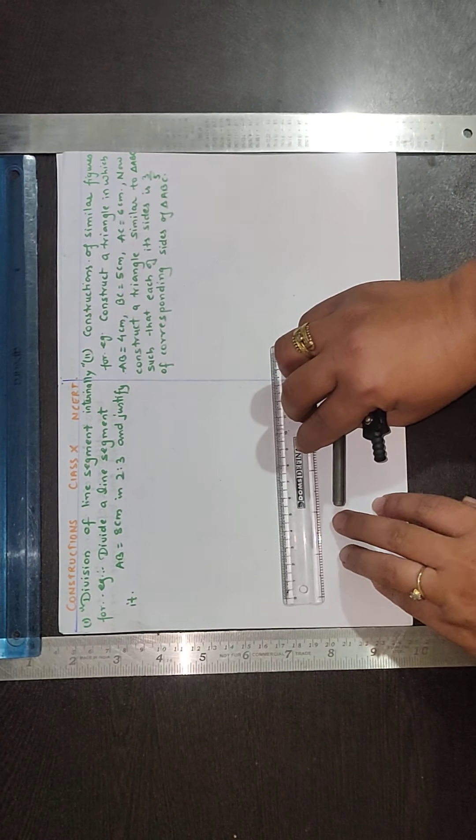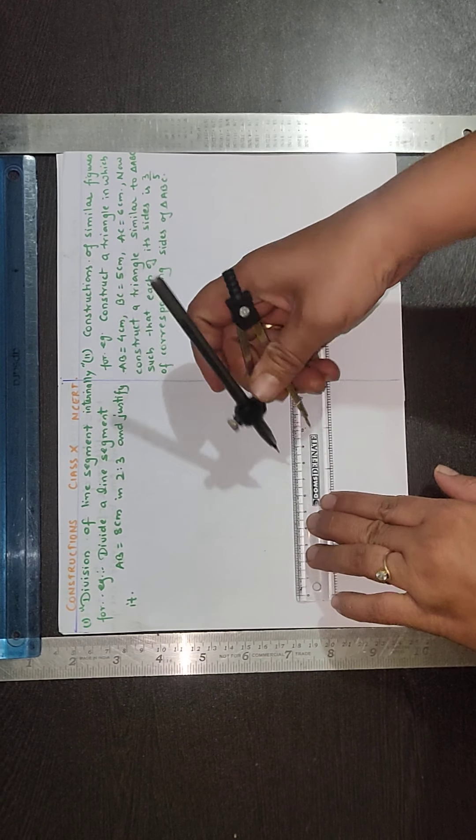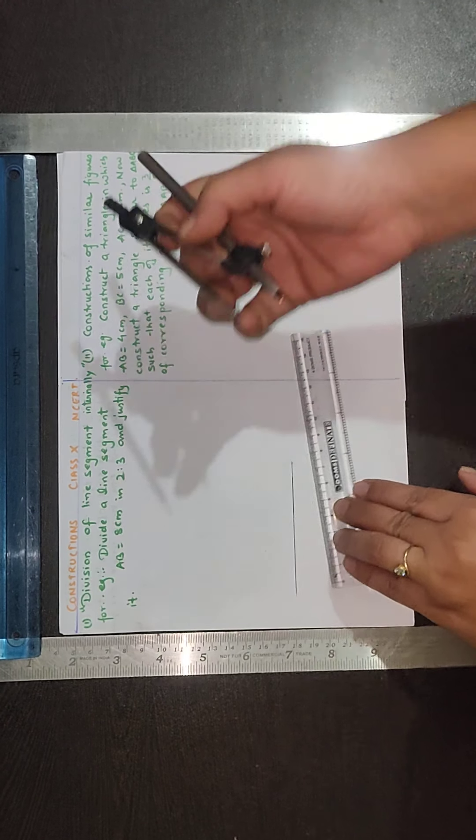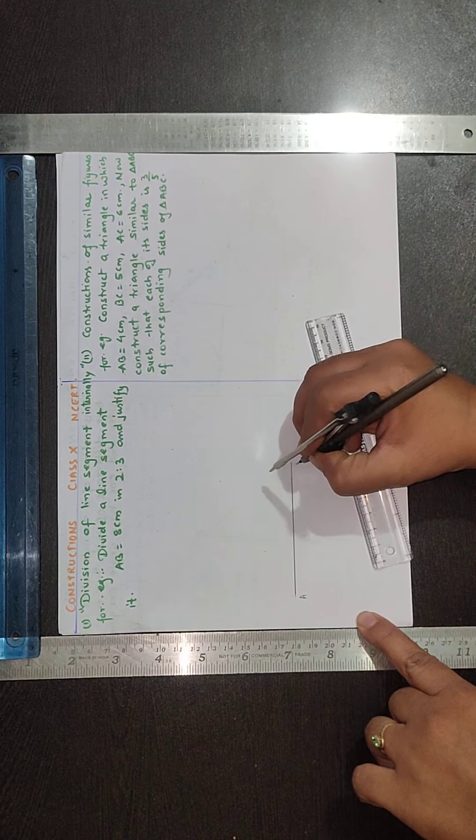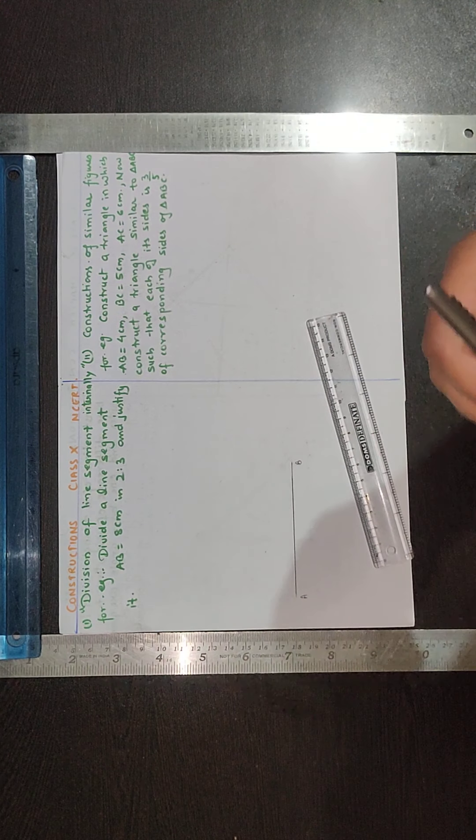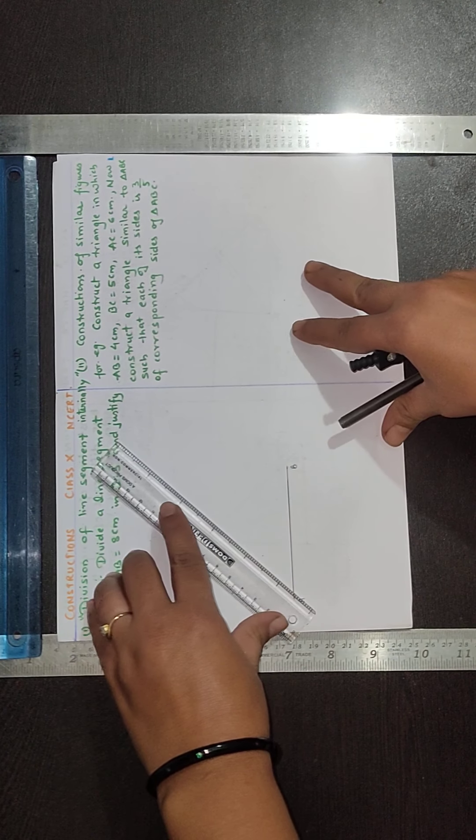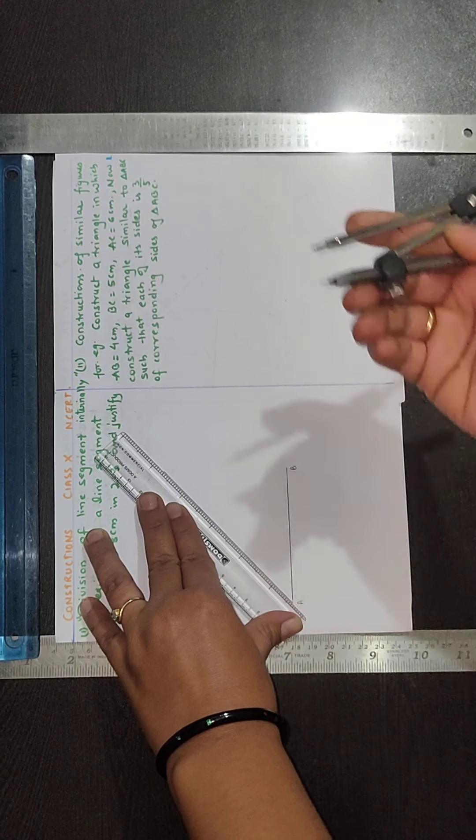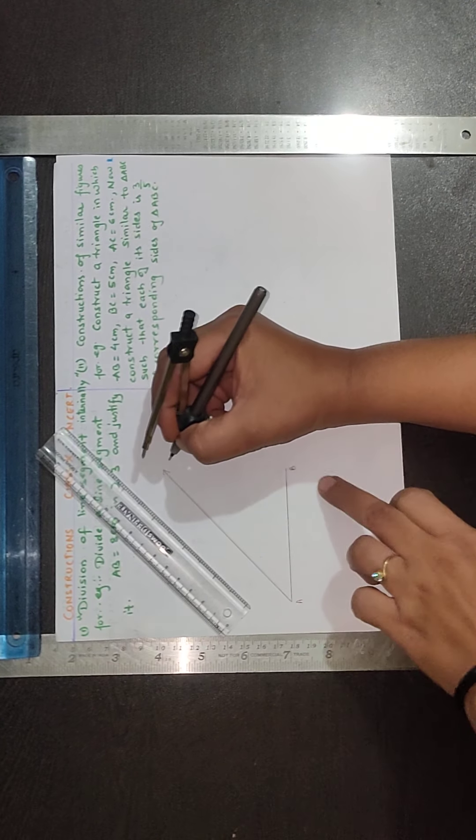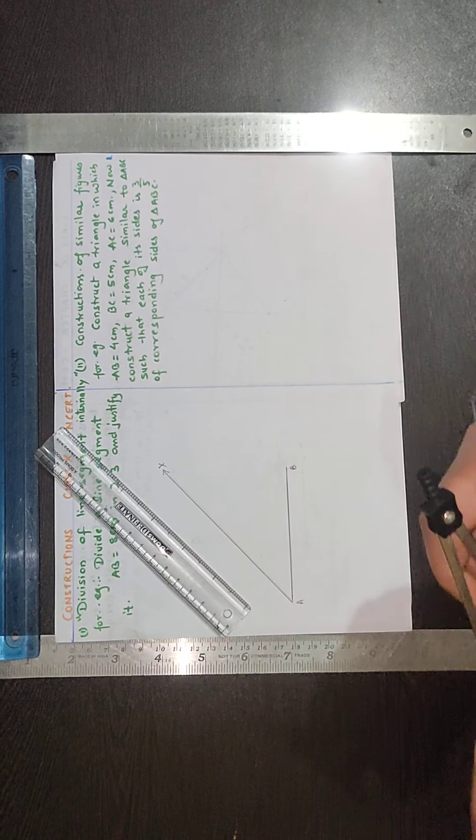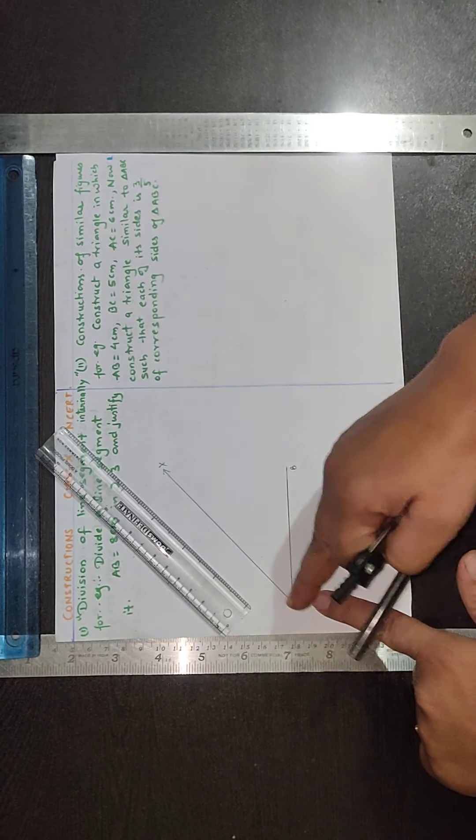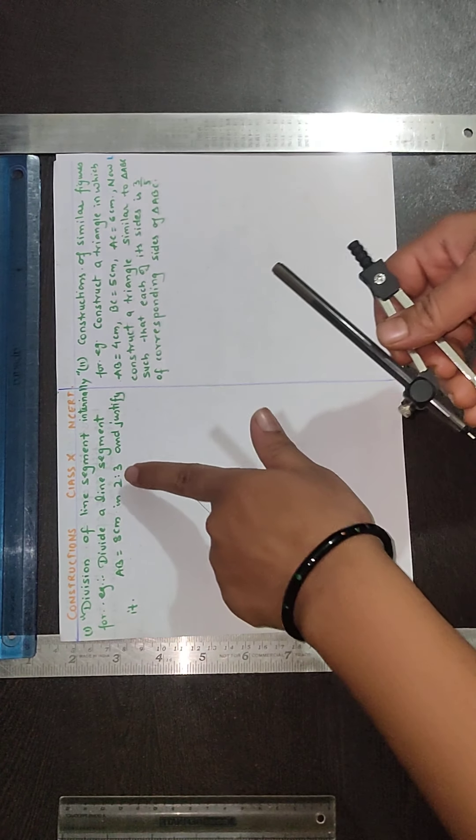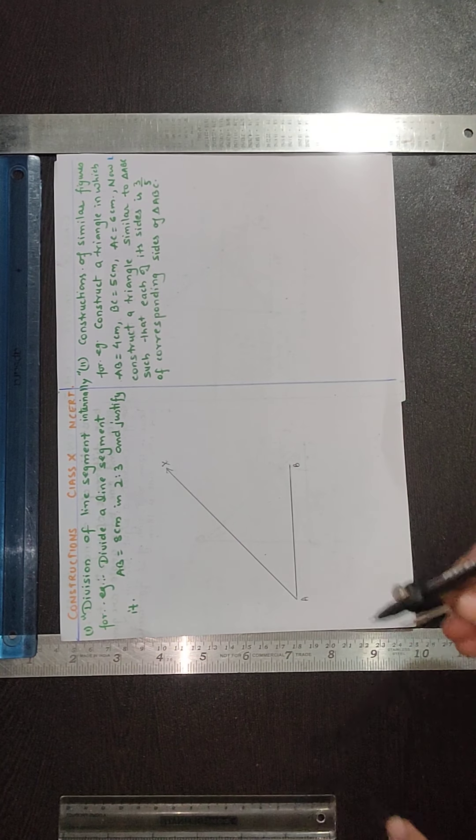So for this first of all we have to draw the line of 8 cm like this. Mark it as AB and draw any acute angle. We have to cut this AX in 5 equal parts because 2 and 3 ratio means 5. 2 plus 3 means 5, so we will divide it as 5 equal parts.